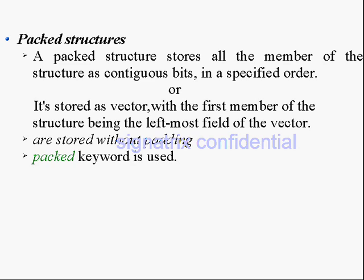Packed structure stores all the members of the structure as contiguous bits in a specified order. In memory, for a packed structure with members A and B, it will store them in a contiguous way — location zero, location one. For unpacked, it may store one member here and another member somewhere else. It is stored as a vector, with the first member of the structure being the leftmost field of the vector — that is the usual convention. Packed structures are stored without any padding.